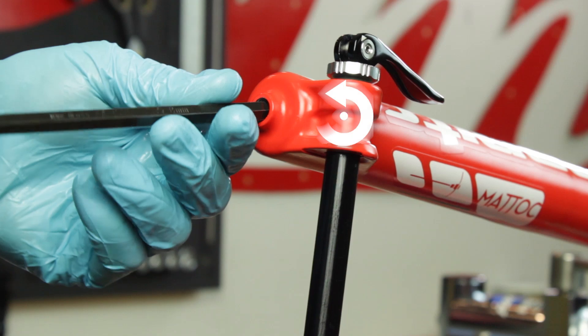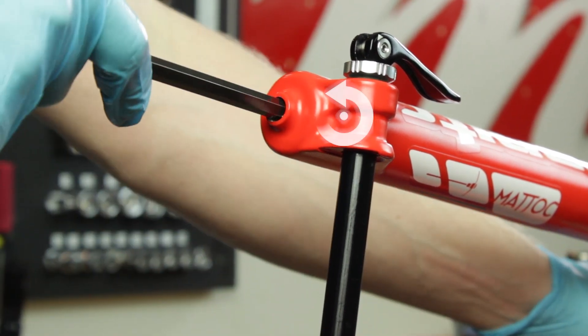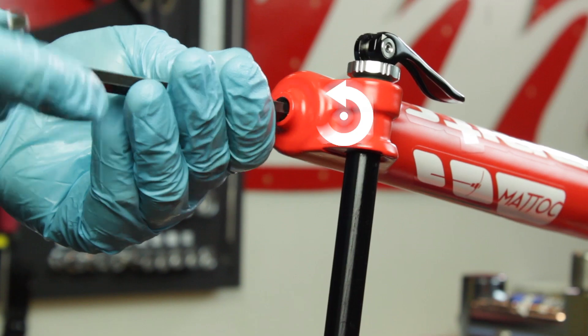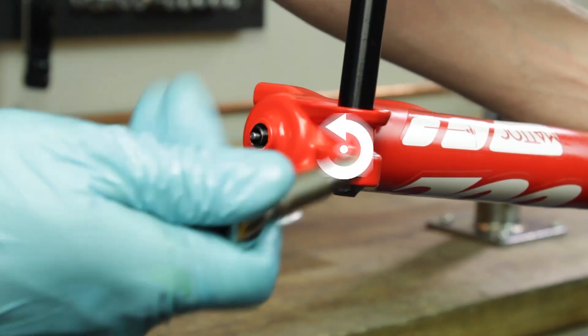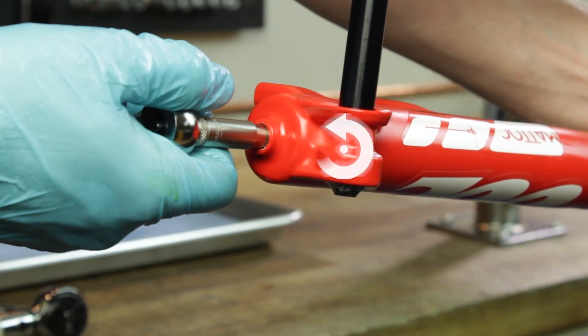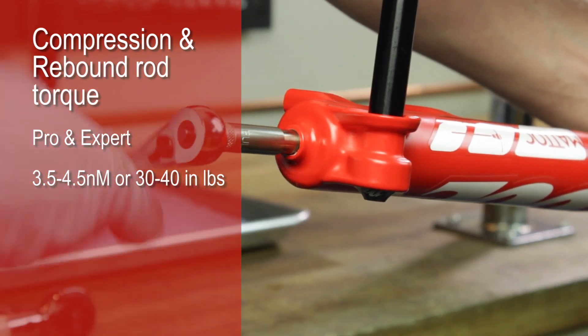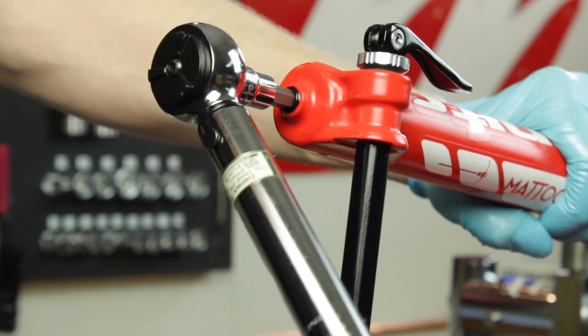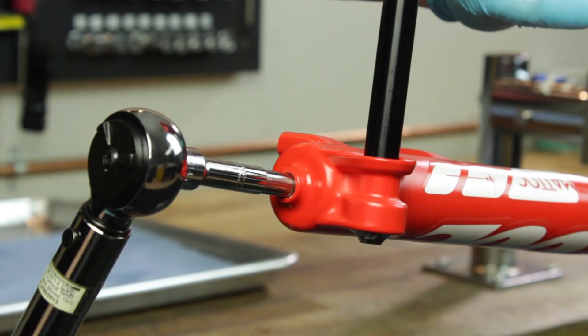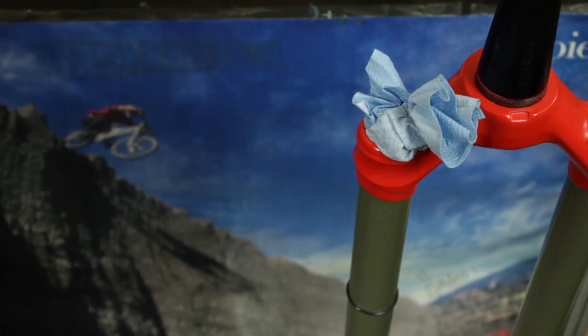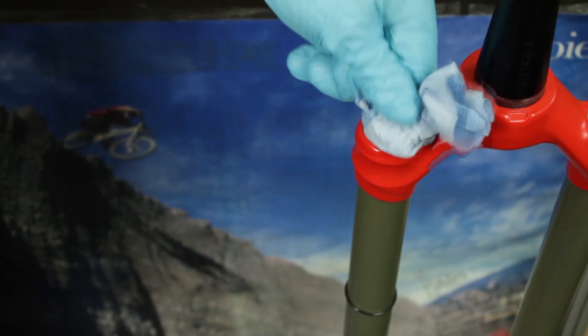Turning counterclockwise, tighten the compression rod and rebound rod adapters to the outer casting at a torque of 30 to 40 inch pounds or 3.5 to 4.5 newton meters. Be sure not to compress down the outer casting while torquing down these two adapters. Position the Matic Crown Steer Tube Assembly in the downward position.